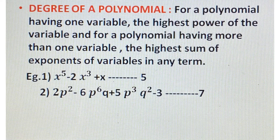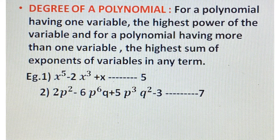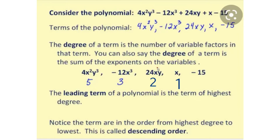Example 2: 2P² − 6P⁶Q + 5P³Q² − 3. This polynomial has two variables, P and Q. The first term has P with power 2. In the second term 6P⁶Q, power of P is 6 and power of Q is 1, giving a total power of 6 + 1 = 7. In the third term 5P³Q², total power is 3 + 2 = 5. The constant 3 has degree 0. The highest sum of powers is 7, so the degree of this polynomial is 7.